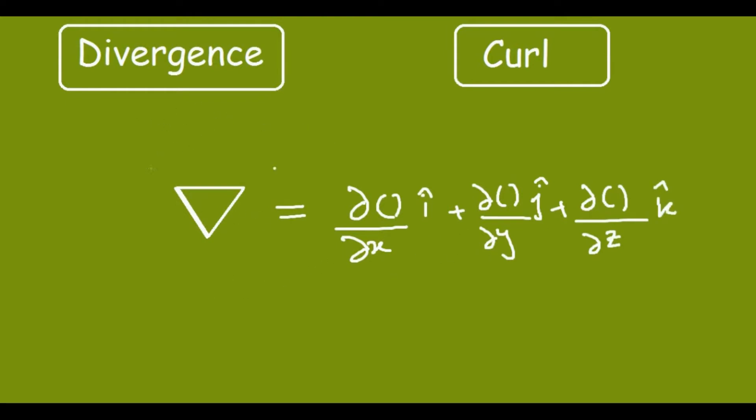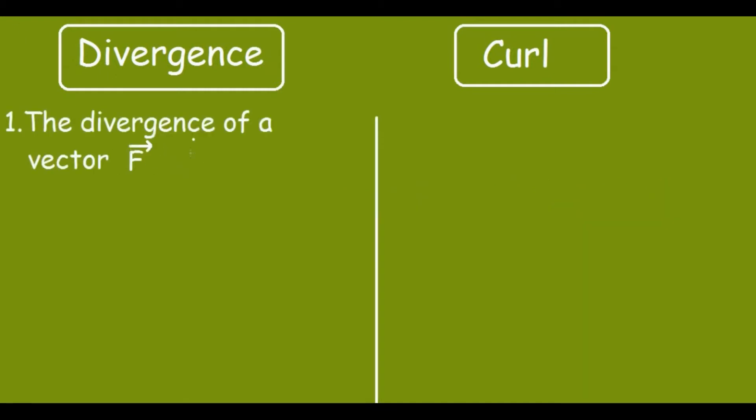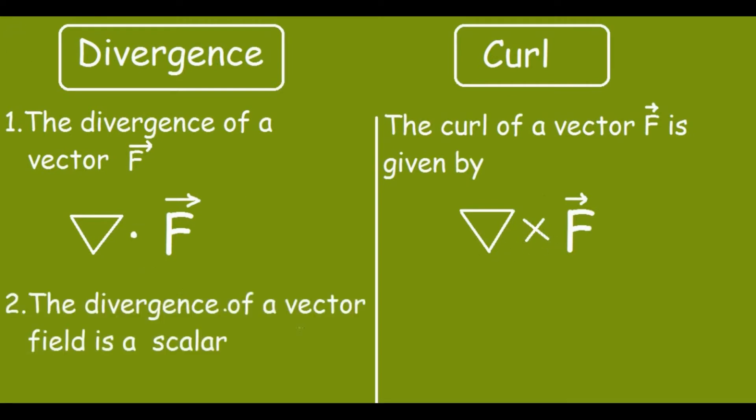Now for divergence, the divergence of a vector f is given by del dot f. And for curl, the curl of a vector f is given by del cross f. For divergence we are using the dot product and for curl it is the cross product.